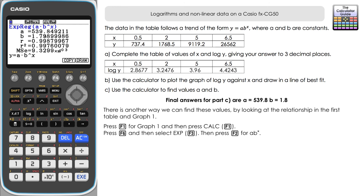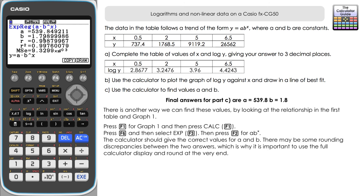You can see that a and B are almost the same as before — there's only a slight difference in later decimal places due to rounding. To one decimal place, 539.8 and 1.8 are still the same values for a and B. It may be better to use the 10-to-the-power method and show that working, but this exponential regression is a great quick check and verification.